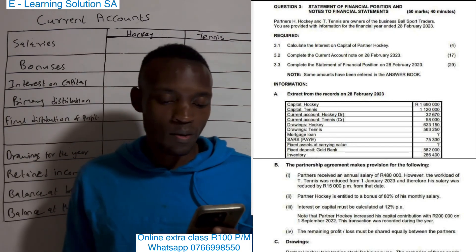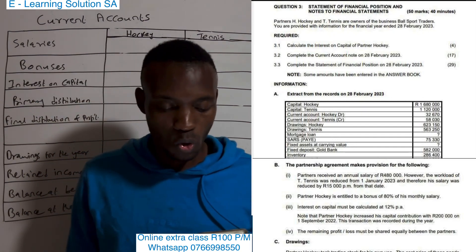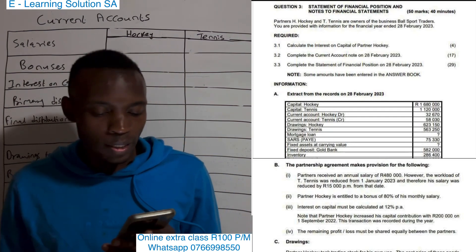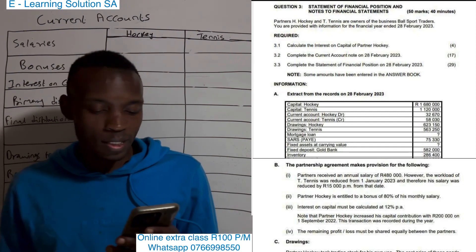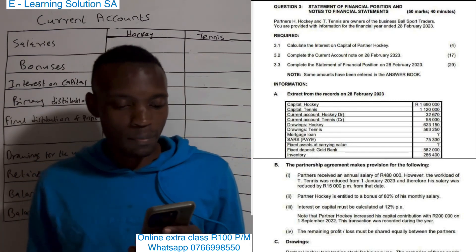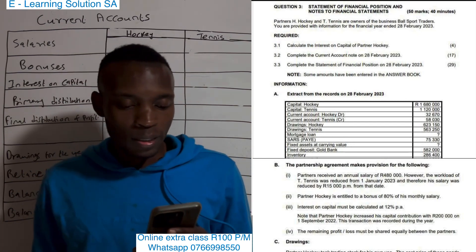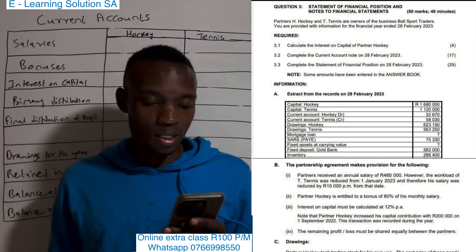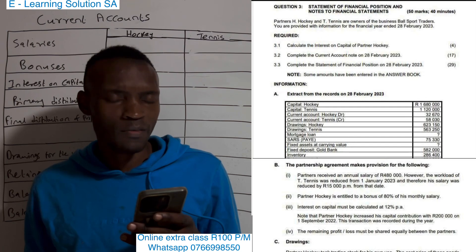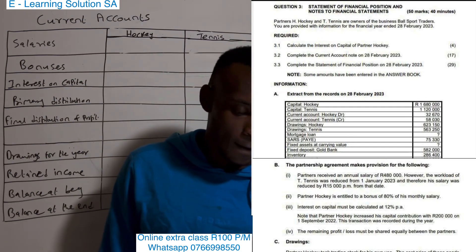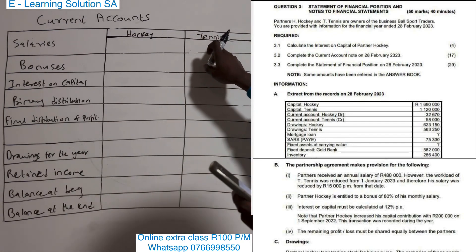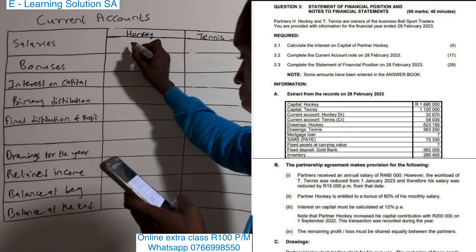Question 3.1 says calculate the interest on capital of partner Hooky, and 3.2 says complete the current account note. This note is very important in Grade 11 because it carries a lot of marks. We have an extract from the records with balances of capital, current account, drawings, and other items. The partner agreement states that partners receive an annual salary of 480,000; however, the workload of T. Tennis was reduced, so his salary was reduced by 15,000 per month. For Hooky the salary is 480,000 with no problem, but for Tennis it is 480,000 minus the reduction.